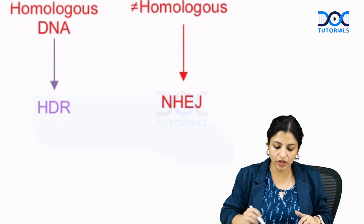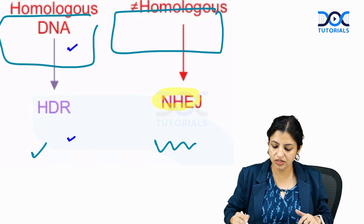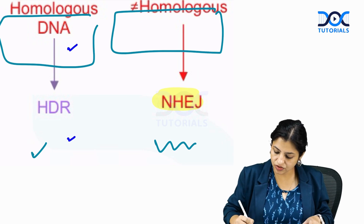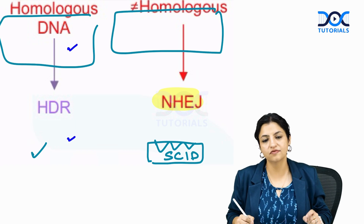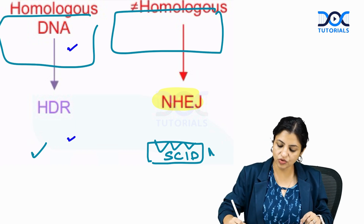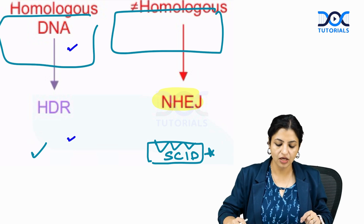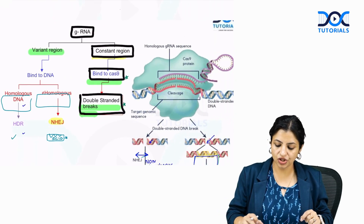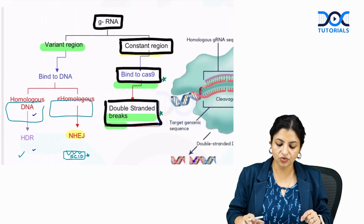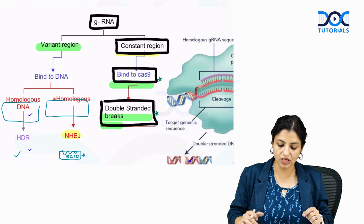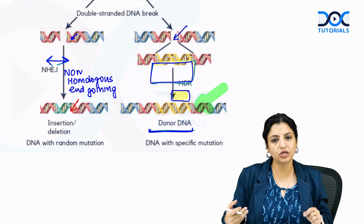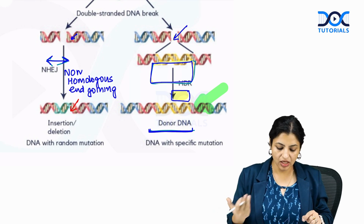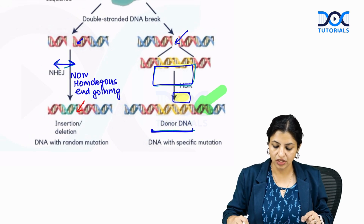Non-homologous end joining defects are also seen in SCID — severe combined immunodeficiency — and this has been asked as an exam question. To summarize: if you add homologous donor DNA, it is homologous DNA recombination; if you do not add homologous DNA, it is non-homologous end joining. That is the classic CRISPR pathway.